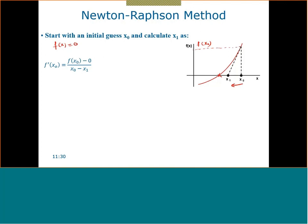We will find f prime at x₀. f prime of any function is equal to change of y divided by change of x. So we will have two points: the point defined by x₀ and the point x₁. The derivative at x₀ equals f(x₀) minus zero, divided by x₀ minus x₁. The only unknown is x₁, because everything else is known.